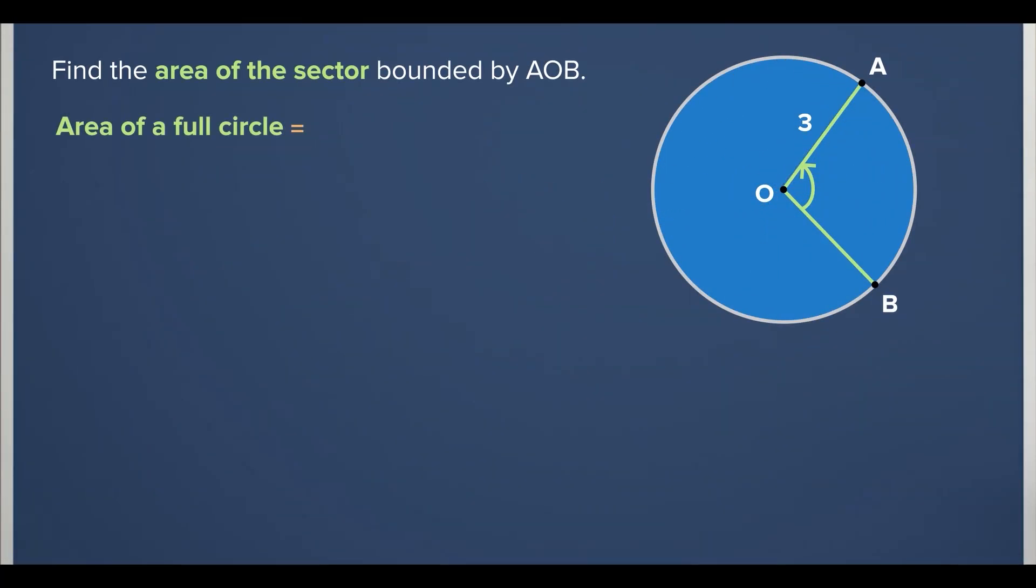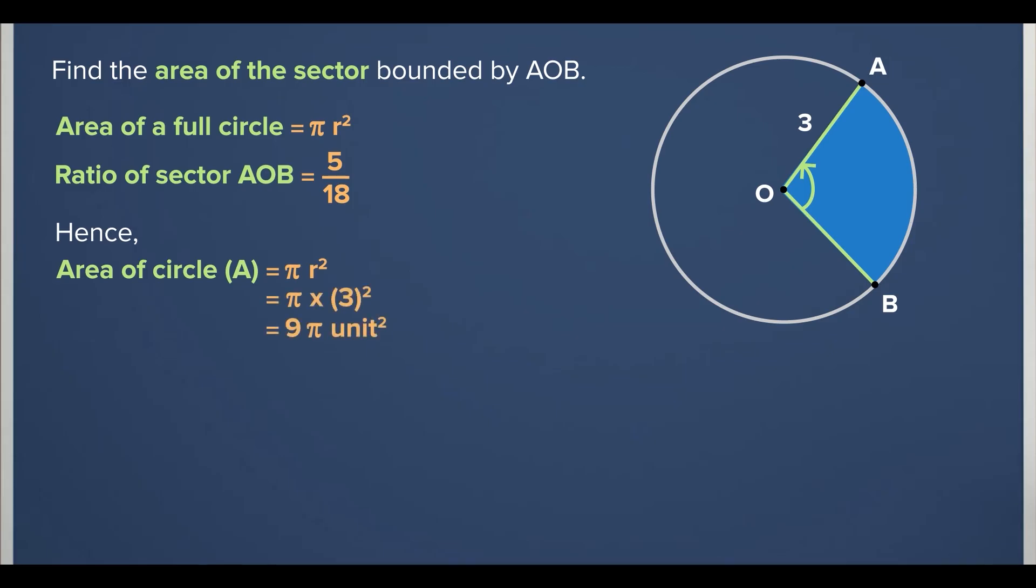So, the area of a full circle is pi r squared, and I already know that the ratio of the sector AOB is 5 over 18. Hence, the area of the full circle is 9 pi units squared. So, the area of the sector AOB would be the ratio of sector AOB times the area of the circle, and the area of the sector is 5 over 2 times pi units squared.